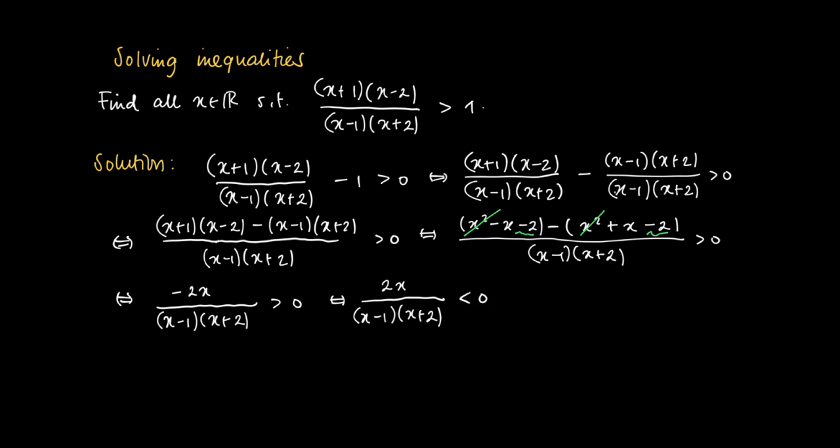Now we proceed in the same way as before by putting up a sign scheme for numerator, denominator, and the fraction as a whole. For the numerator, we see that the numerator cancels at x equals 0. So put a straight line at 0, and on the left hand side we see a minus sign and on the right hand side we see a positive sign.